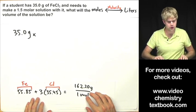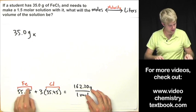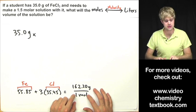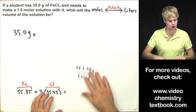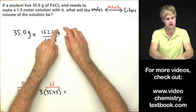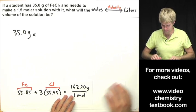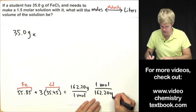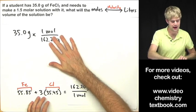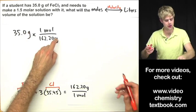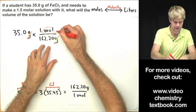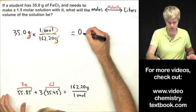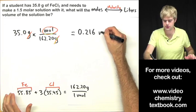Iron chloride is made of iron and three chlorines, so we add the molar mass of iron plus three times the molar mass of chlorine and get 162.20 g/mol. Writing the molar mass as grams over moles won't work because grams cancel with grams, so we flip it: 1 mole divided by 162.20 grams. Grams cancel out and we get 0.216 moles, rounded to three significant figures.